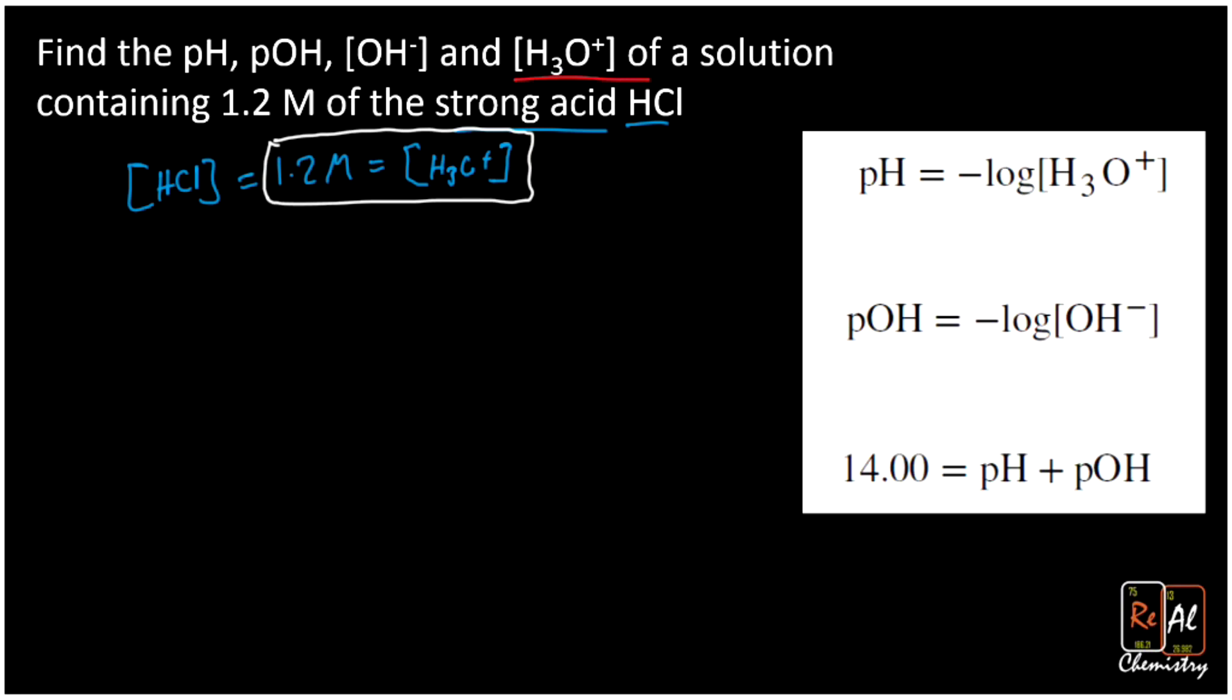Now let's go ahead and find pH, pOH, and OH-. Which one should we go to next? Well, if we look to our equations at the right, we just think about which one can we solve. Well, we have H3O+ concentration but not pH. So that means we can go ahead and solve for our pH.